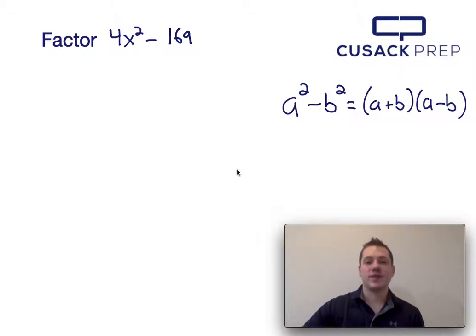All I have to do is recognize that a squared is in the same position as 4x squared, and b squared is in the same position as 169.